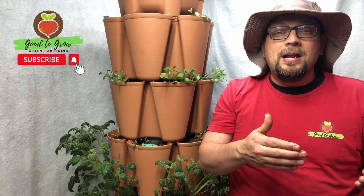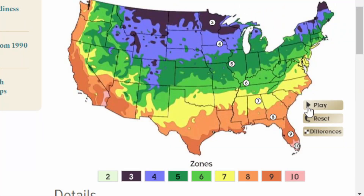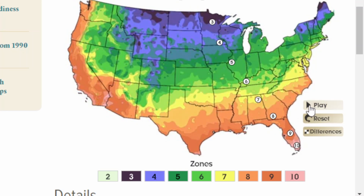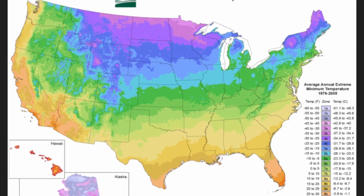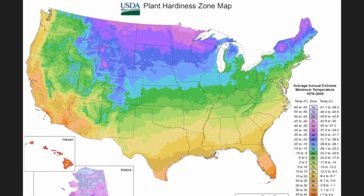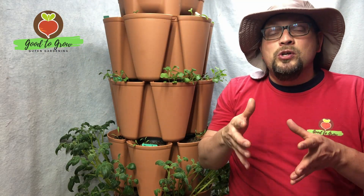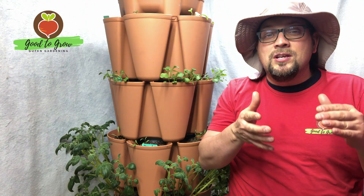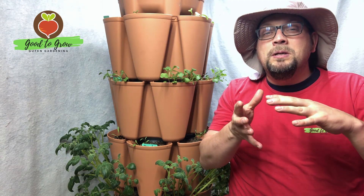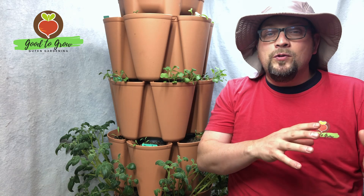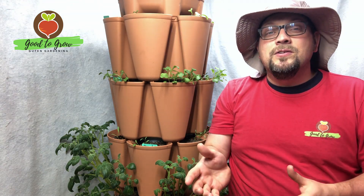That map has been updated about every 10 to 15 years. The map we've been using most recently, before this latest update, was from 2012. Even from 1990 to that last version, you can see some of the shifts in cold temperatures and movement for those lower growing zones. Historically, we've seen this map change over nearly 65 years to reflect average weather patterns.